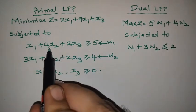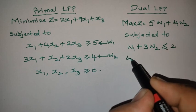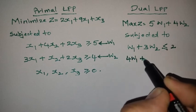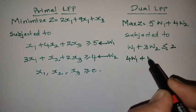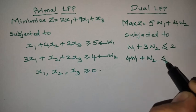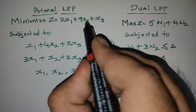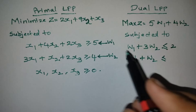Next, second constraint: 4W1 plus W2 less than or equal to. What is the X2 coefficient? It is 9.